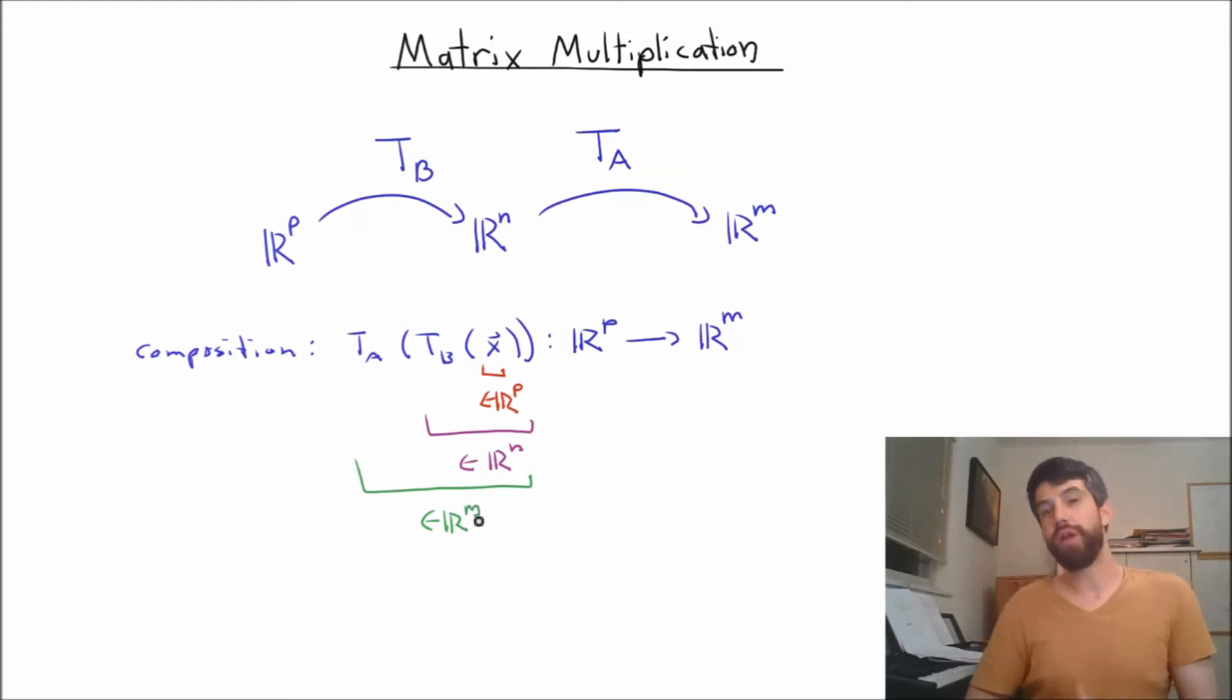Now, this is a transformation. We could check that it indeed is going to be a linear one, that composition of linear transformations is indeed going to be linear. So then, the big question is this: If this is a linear transformation, and we know that every linear transformation can be written as a matrix transformation.